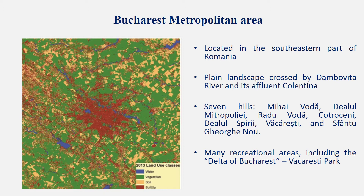There are seven hills: Mihai Vodă, Dealul Mitropoliei, Radu Vodă, Cotroceni, Dealul Pișcului, Văcărești, and Sf. Gheorghe. There are also many recreational areas, including the delta of Bucharest and Bucharest Park. Non-linear ground response analysis performed by different institutions in the eastern part of Bucharest revealed ground motion with a frequency content similar to that recorded during the Vrancea 1977 earthquake.